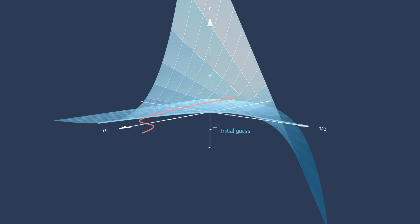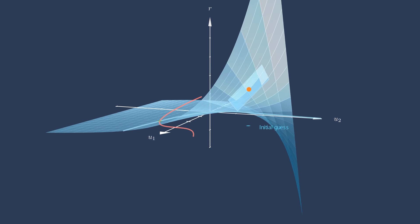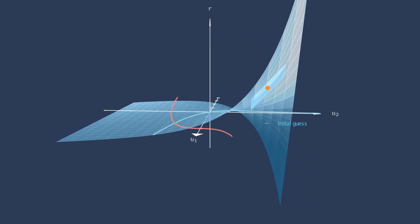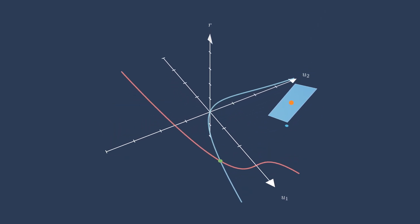Let's start by looking at the first residual. At the current guess, we compute the first residual's value and its slope. Using that information, we build a tangent plane and find where that tangent plane equals zero, where it intersects the u1, u2 plane.